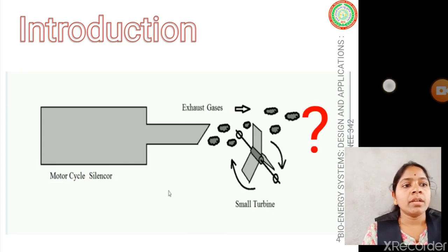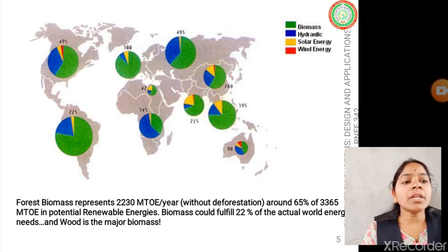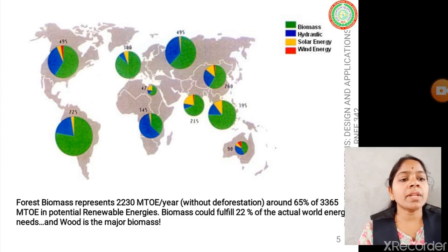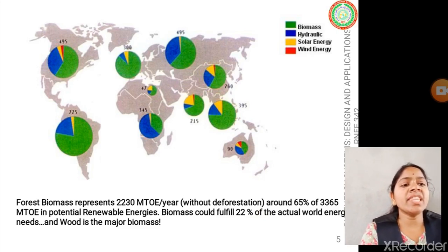Forest biomass represents an alternative source to fossil fuels. As shown in this figure, 2,230 million tons of oil equivalents per year can be produced without deforestation — approximately equal to 22% of the world's energy needs — which can be met from biomass without deforestation.